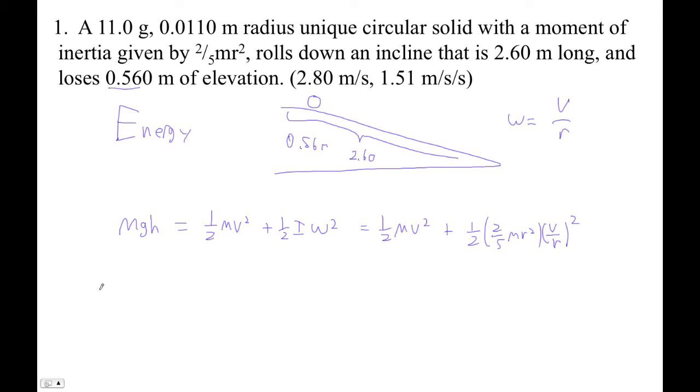So now I've got MGH equals 1/2mv² plus, and the 2 and the 2 go away, so I've got 1/5, and the r² and the r² go away, so 1/5mv². The m's also go away. And then we've got 5/10v² plus 2/10v².